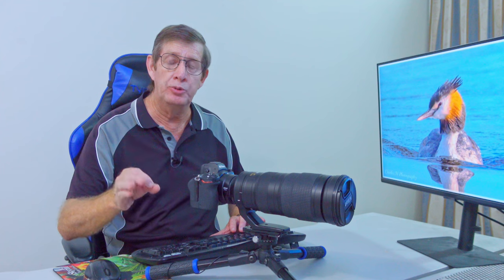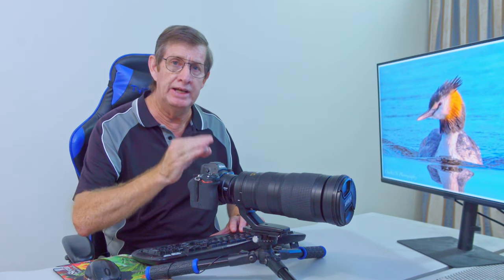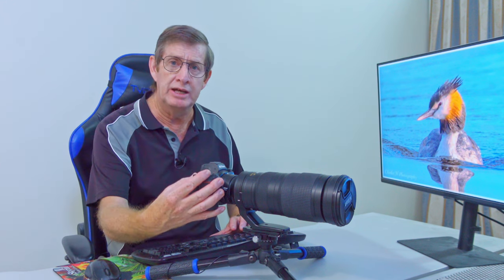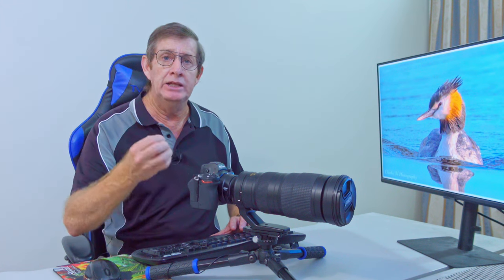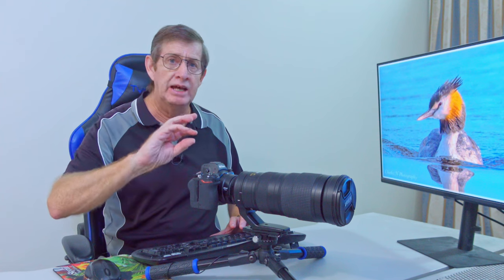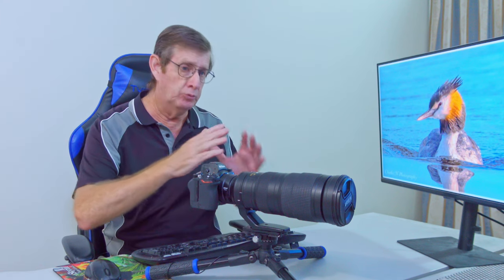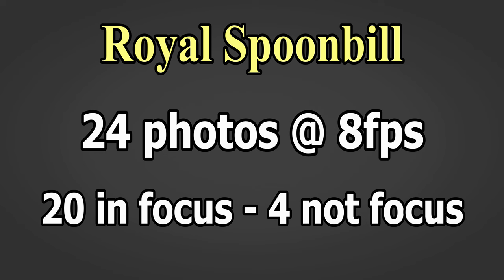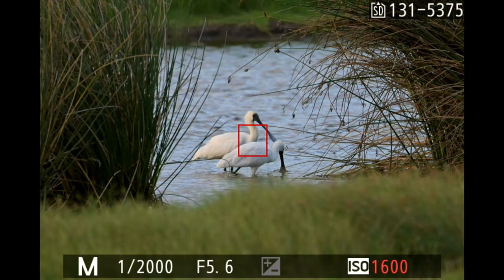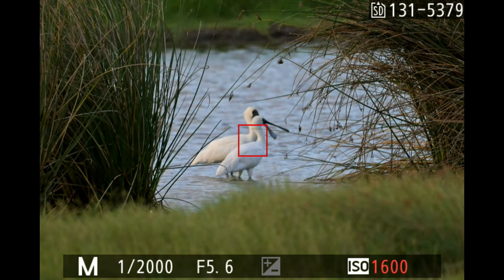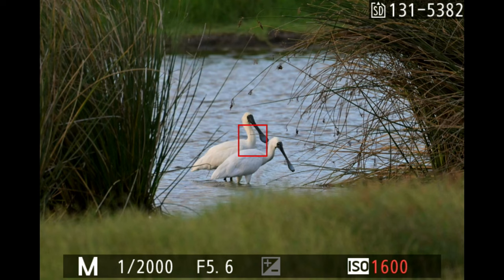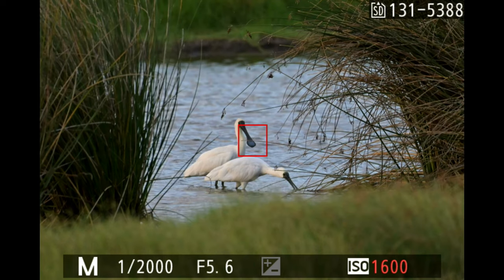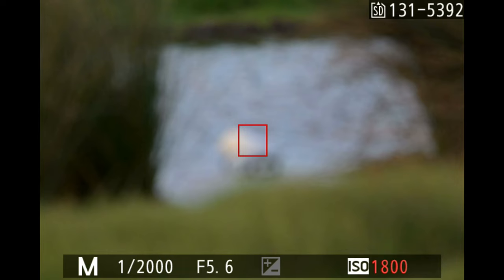This last set is some royal spoonbills just feeding, and this is the only time that afternoon that the focus let me down. Sometimes I just take my finger off the back-button focus and it throws the camera out. As soon as you repress it, it takes a split second for the camera to lock back on, which allows the camera to go out of focus and try to refocus — and you end up missing a few shots. This is where it just zoomed out and then zoomed back in again.